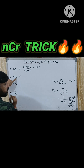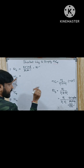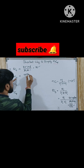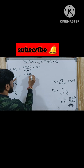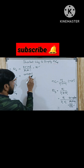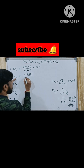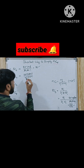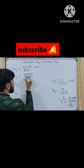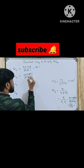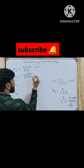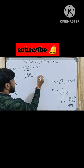Let's try 10C4. Since r is 4, write 4 digits in decreasing order from 10: 10 into 9 into 8 into 7, divided by 4 into 3 into 2 into 1. Then 4 into 2 is 8 which cancels, 3 into 3 cancels with 9 giving 3, and 3 into 7 is 21 into 10 divided by remaining terms gives 210. Your answer is 210, friends.